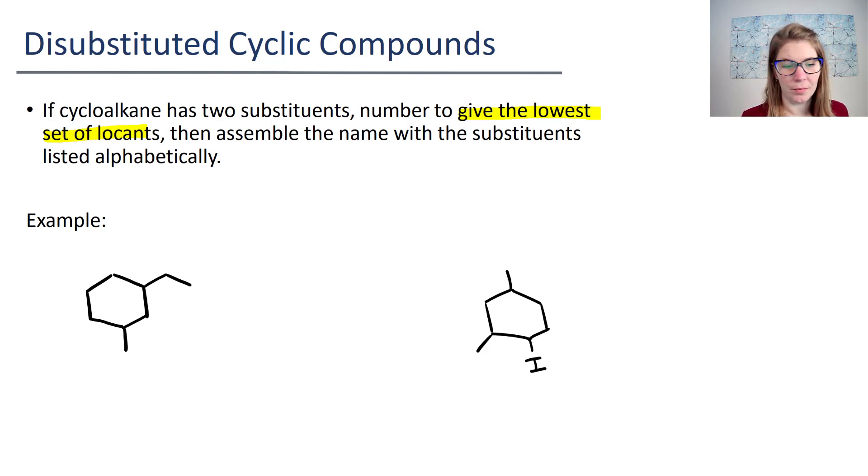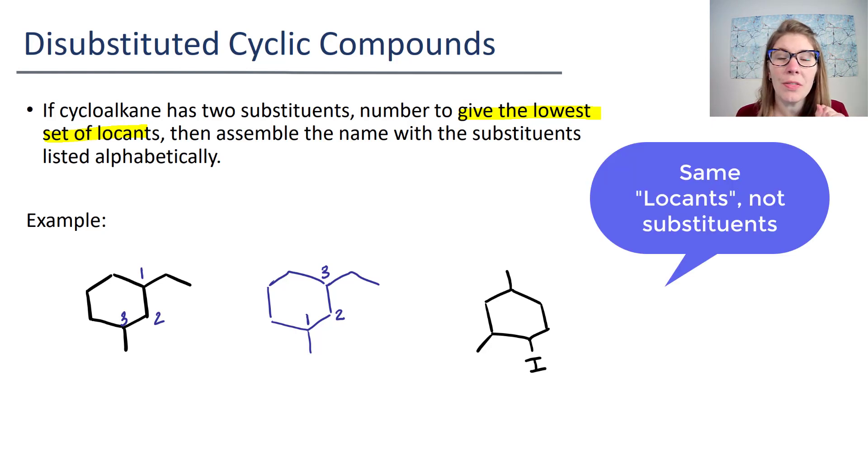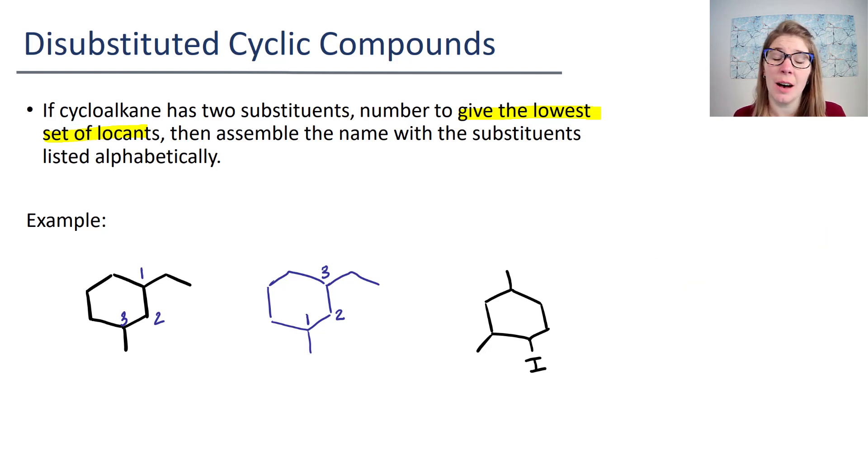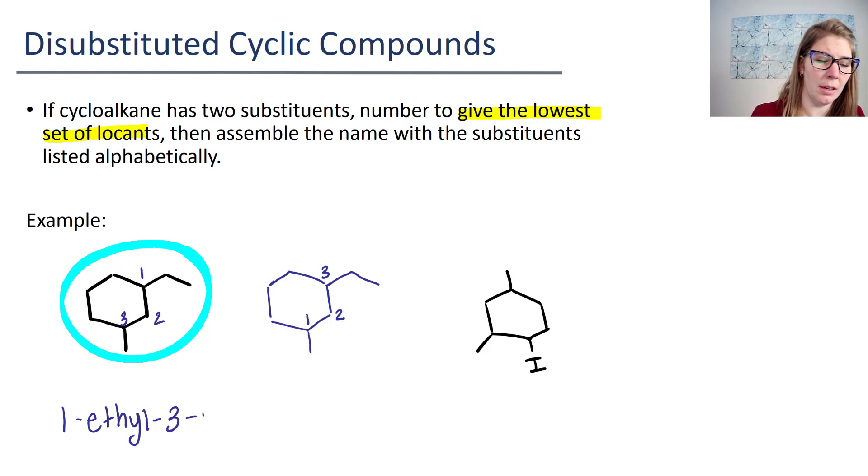So for example, for this first one, we have a situation here where we have two substituents. We will have one, two, three. We'll have a one and a three position. If I numbered the other way, and I'm going to do that really quick—if I numbered one, two, and three, I can number two different ways and get the same substituents. What that means is I need a tiebreaker. I need the alphabet to come in and tell me which way to number. And what's going to take priority is the substituent that comes first in the alphabet. So E for ethyl is going to win over M for methyl. And so the first set of numbering is going to be the way that we go. And we're going to call this 1-ethyl-3-methylcyclohexane.